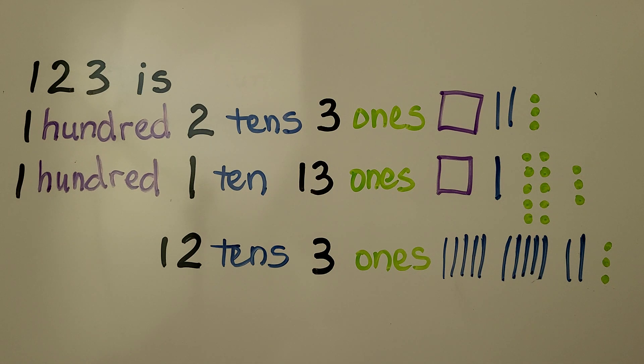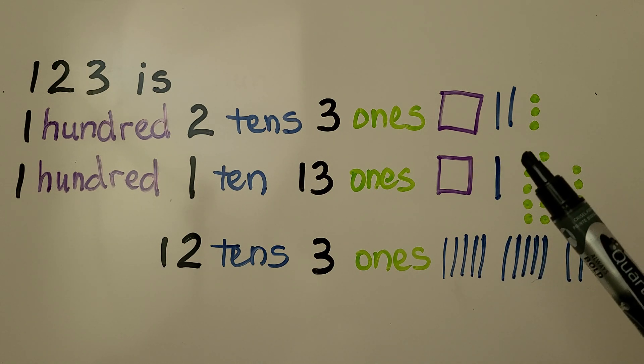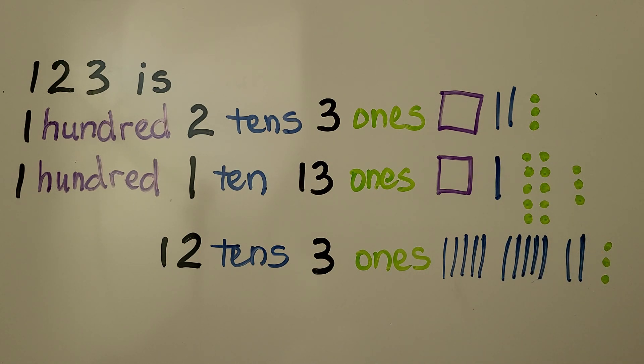123 is 100, two tens, three ones. We can draw a quick picture and make a square for a hundred, two lines for tens, and three dots for ones.